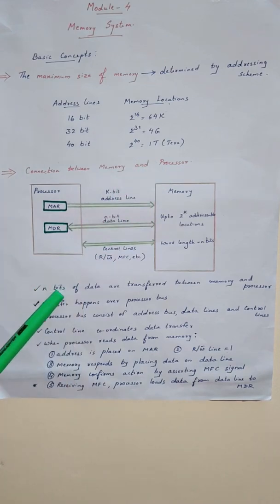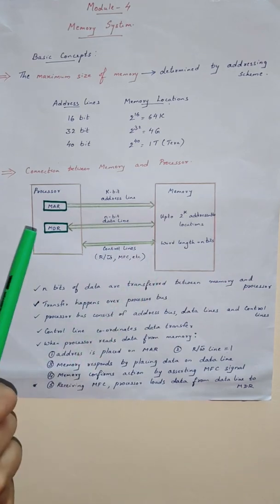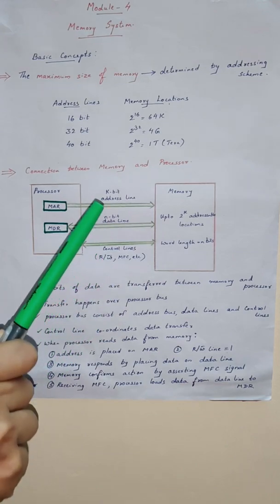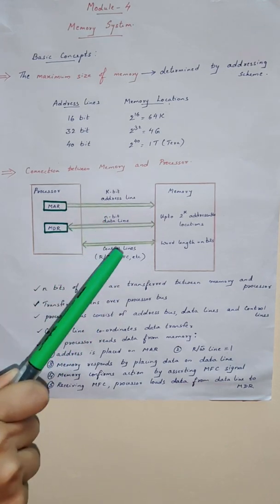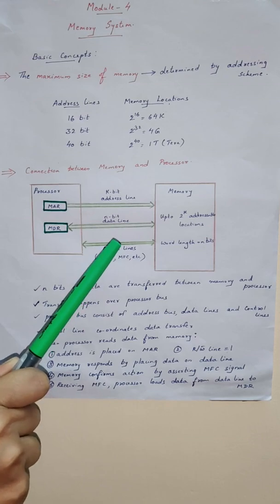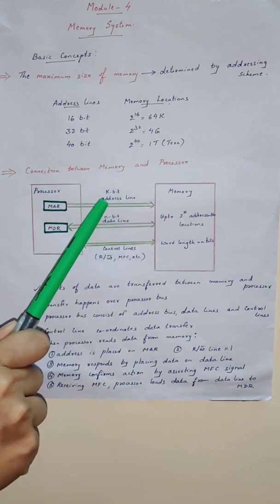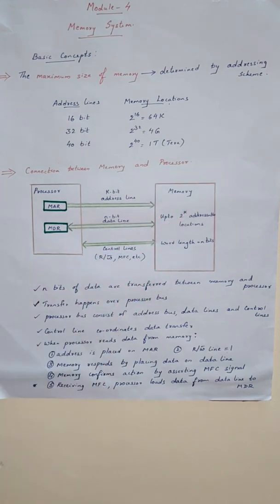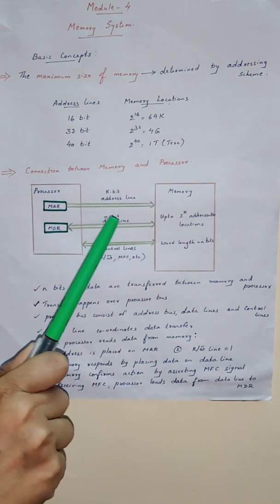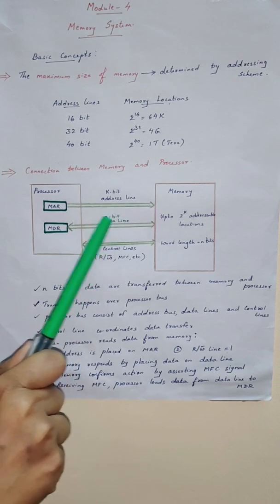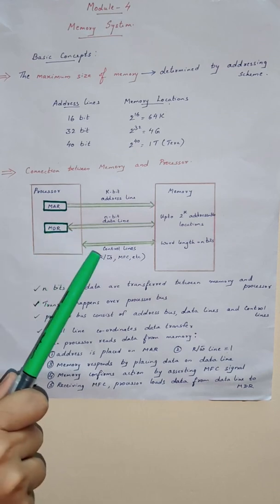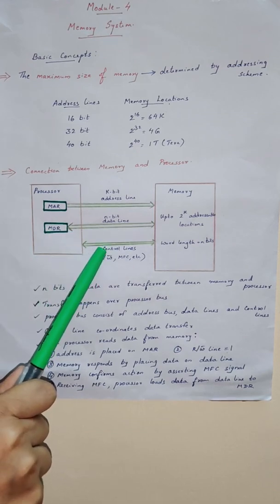Let's say we transfer n bits of data between the memory and the processor. This transfer happens over a processor bus. This processor bus consists of three lines: address line, data line, and control line. If we have a k-bit address line, the maximum size of the memory is 2 to the power k. If the data line is n bits, that means n bits of information can be transferred between the processor and the memory.